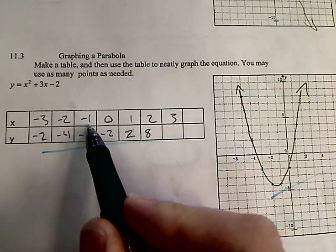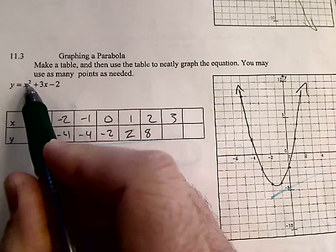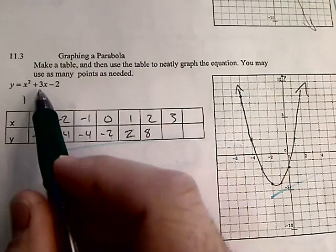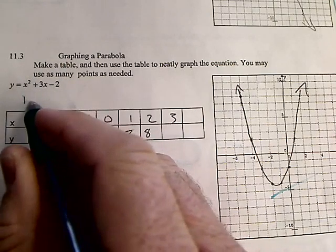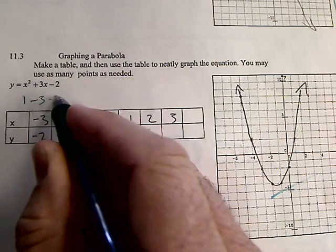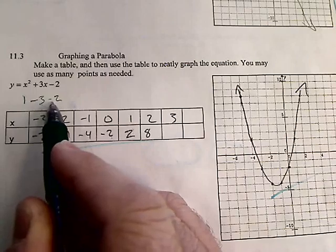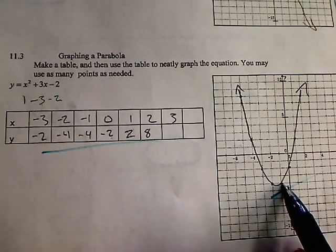The biggest mistake people make are these negatives. Plug in a negative one. Negative one times negative one is going to be positive one. Negative one times three is negative three, minus two. So that's one minus three is negative two, minus two more is negative four. So negative one, negative four. Put a dot.